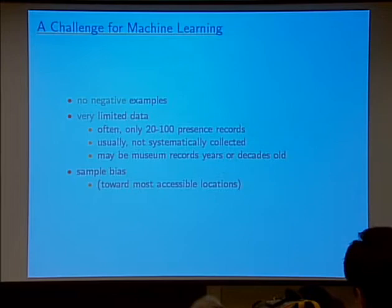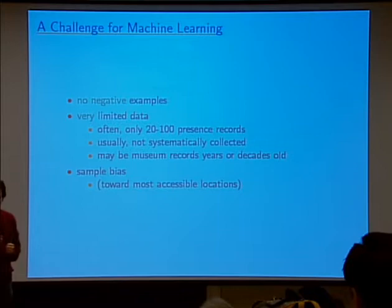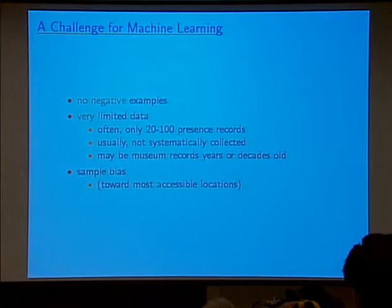My interest is in machine learning, so why is this an interesting problem from a machine learning or statistical point of view? One reason is that there are no negative examples. A positive example is where you actually observe the species, and a negative example — an absence record — is where you don't. The biologists tend not to have absence records. In principle you could be using information from another species.